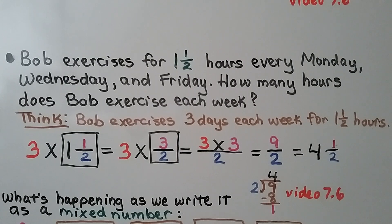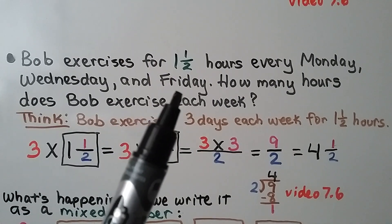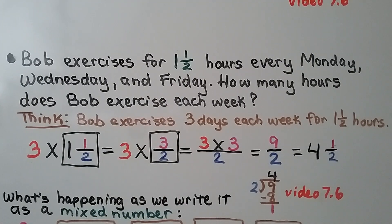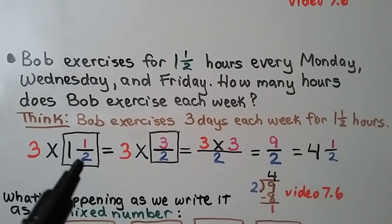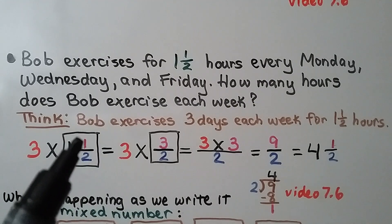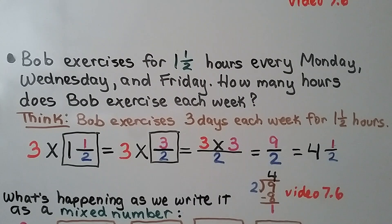Bob exercises for 1 and a half hours every Monday, Wednesday, and Friday. How many hours does Bob exercise each week? Bob exercises 3 days each week for 1 and a half hours each day, so we're going to do 3 times 1 and a half. We write the 1 and a half mixed number as a fraction greater than 1: 1 times 2 is 2, plus 1 is 3. We write it over that denominator — we have 3 halves. Now we multiply the whole number to the numerator: 3 times 3, that's equal to 9, written over the same denominator — we have 9 halves.